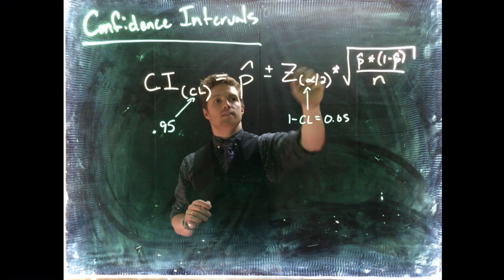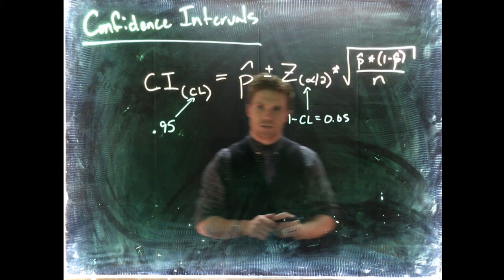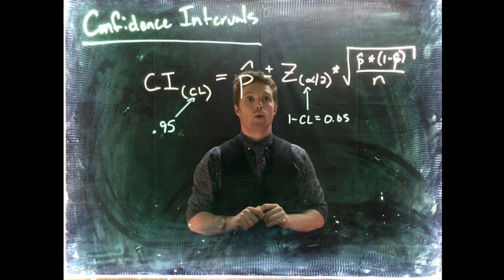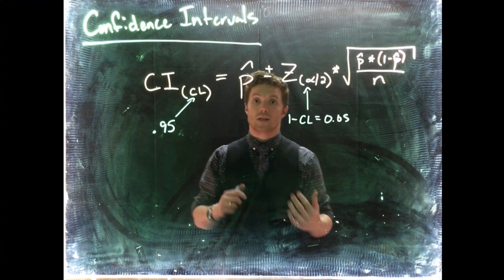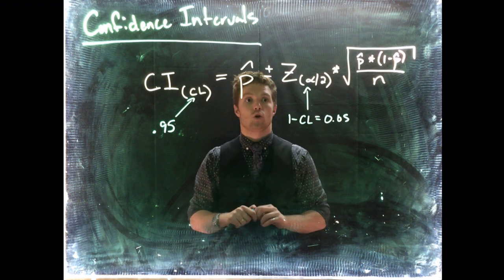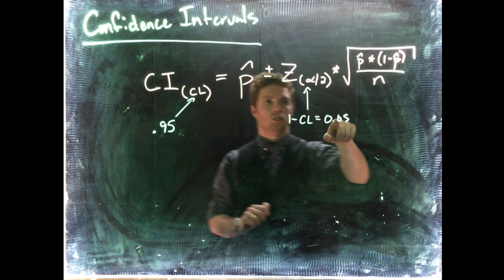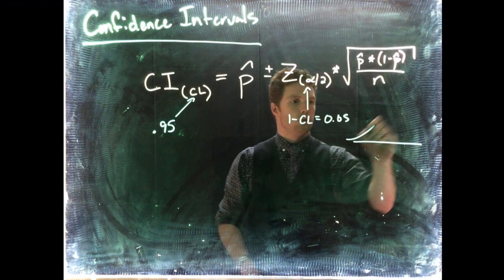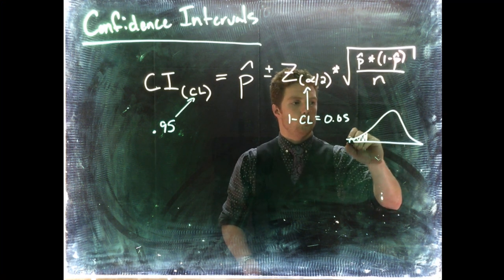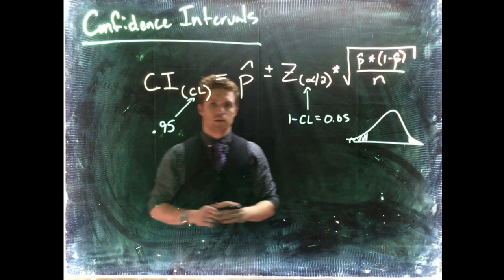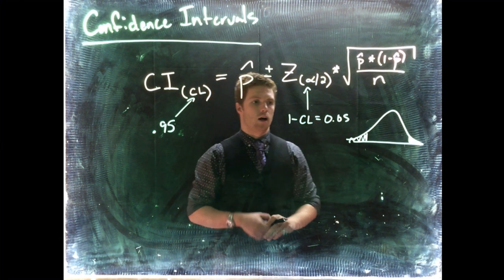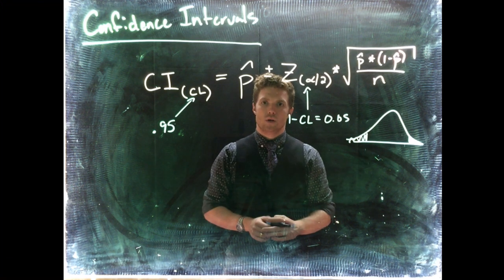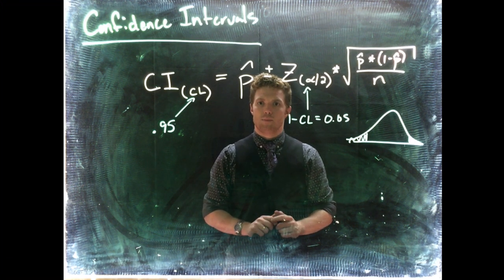So this z value is also known as the critical z. What we do to find this is we need to go and look it up using R Commander, and we use the quantiles. So we put in alpha, which is 0.05, divided by 2. Remember, when we're doing these confidence intervals, we're talking about doing two tails. Throwing some of our error up on top, and throwing some of our error on the bottom. So this is how we build the confidence interval when we are talking about sample proportions.